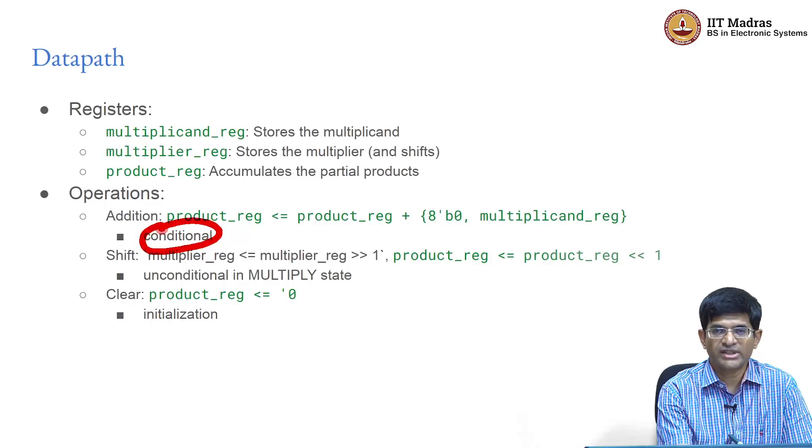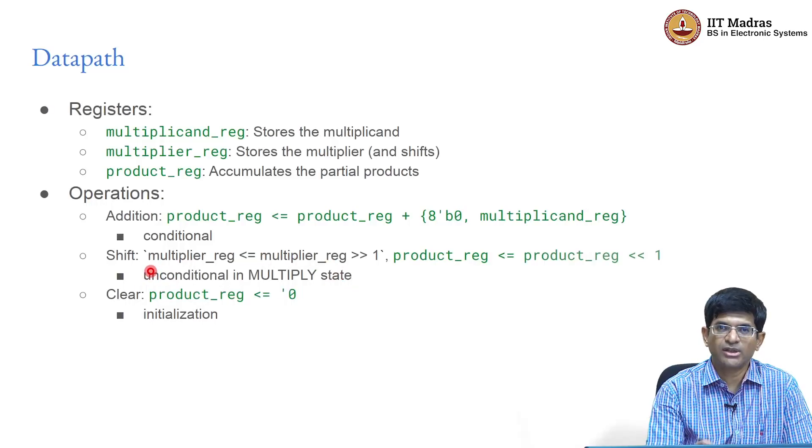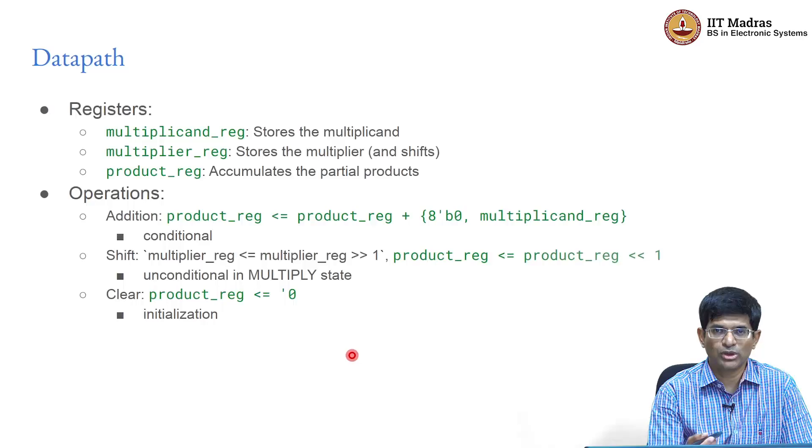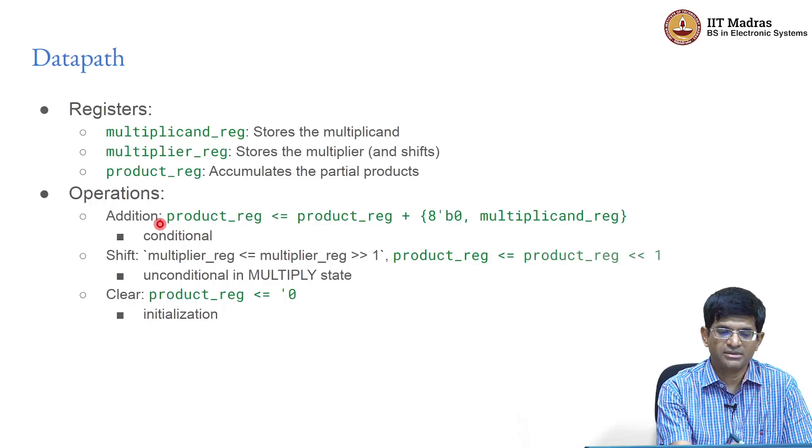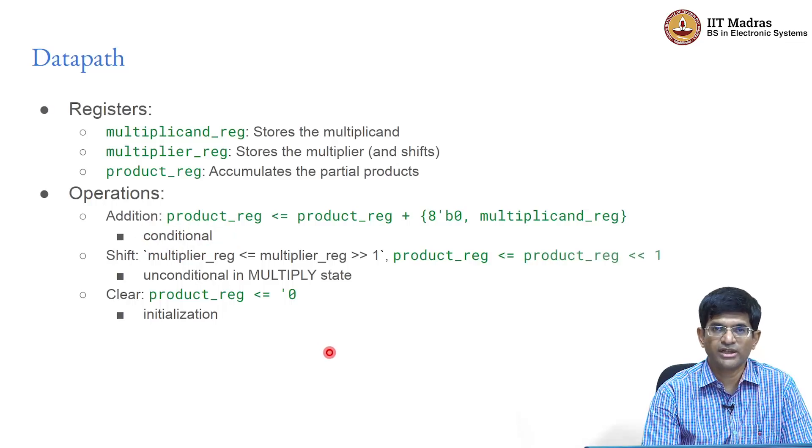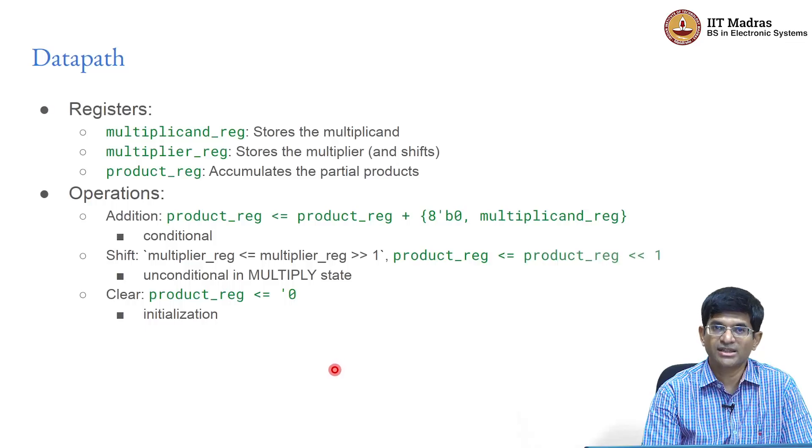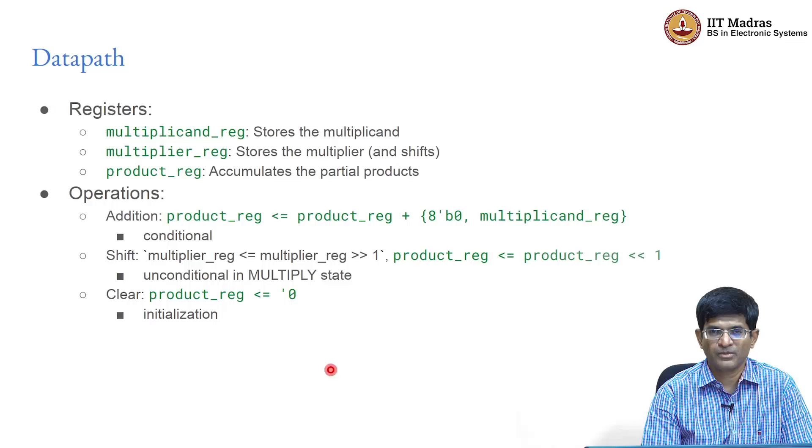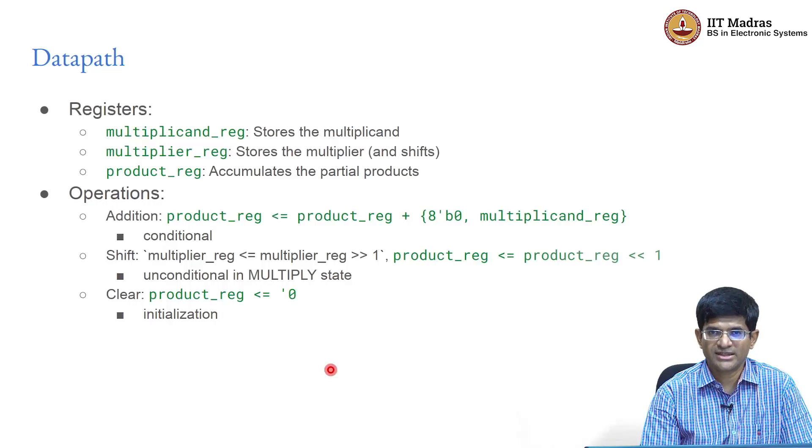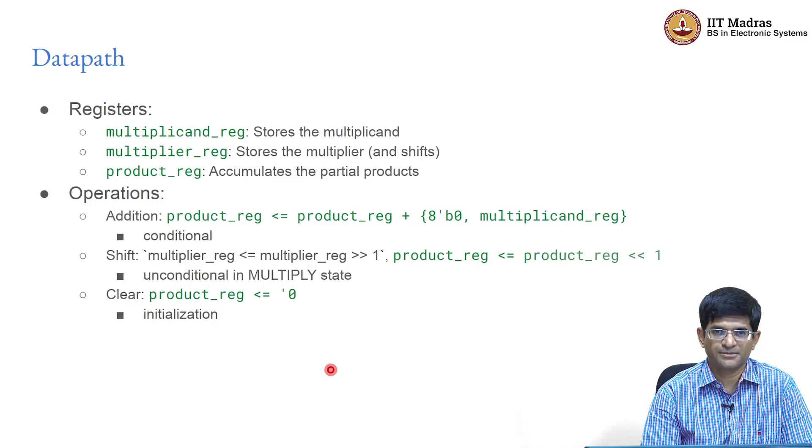Each of these happens under some kind of control of the finite state machine. The addition is conditional - only when the add multiplicand signal is 1 is it going to add. The shift on the other hand is unconditional - any time that you are in the multiply state you need to shift. It is more like a Moore output, as long as you are in this state the shift output is going to be 1, whereas addition says not only should I be in the multiply state I also need to have the input being equal to 1. Finally, the product register can be reset to 0 by using a clear signal. We do not want to use the reset signal for doing this because reset is usually reserved for when you power on the system for the first time. I want some way to reset my computation after every calculation to be ready for the next operation.